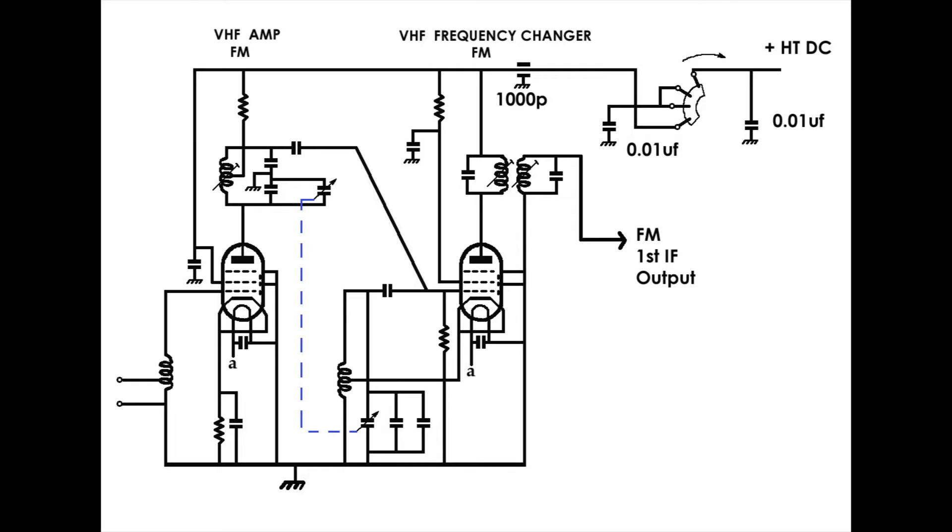I talked about the HT DC in the previous video, so we'll carry on and show the path of the HT DC. The positive HT DC voltage comes in the top right-hand corner of the image there, and the negative connection, of course, is made via the chassis.